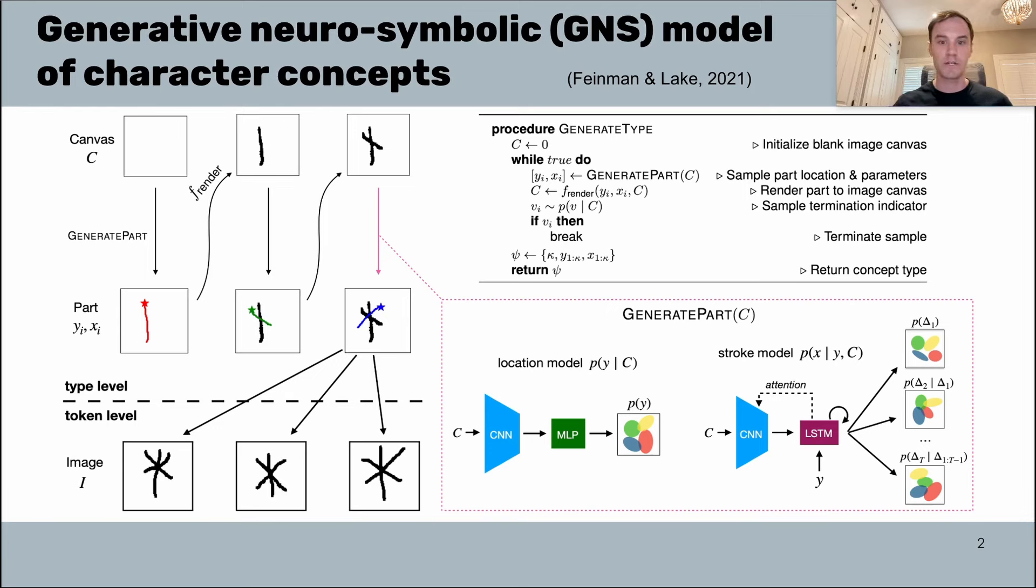I'd like to demonstrate this by walking through sequentially what the sampling process looks like. As you can see in the first line of this pseudocode, for this program generate type, we have C0—we're initializing our image canvas as a blank image. This canvas is going to be the memory state for the program as we're drawing a character sample.